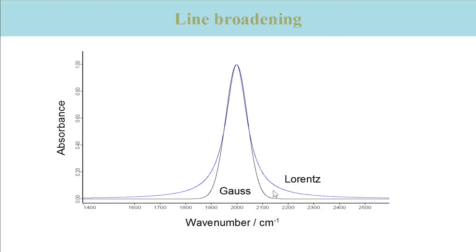Note however, that this comparison is somewhat artificial, since processes that give rise to Lorentzian lines tend to produce narrow lines, whereas processes that cause Gaussian lines give broad lines.